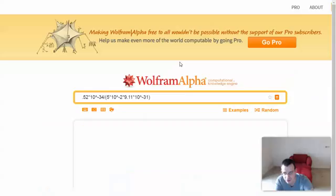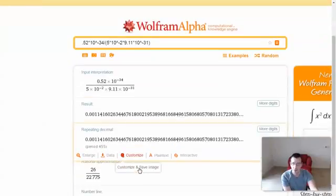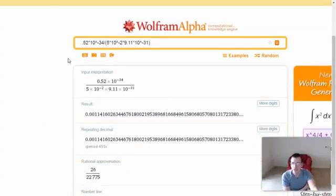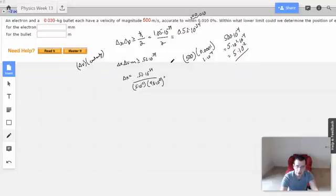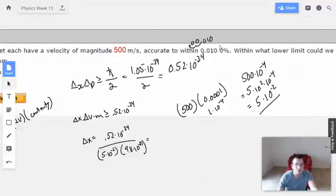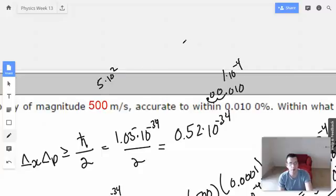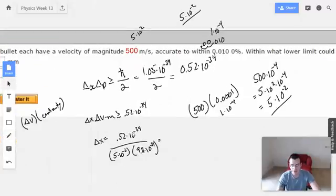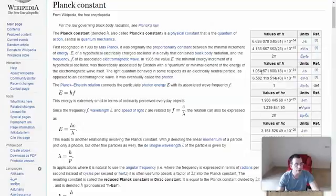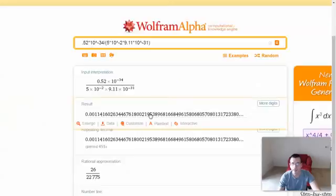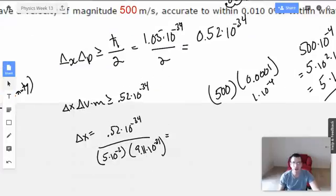This will give us an answer. That's actually really big. Let me make sure I got some of the math right here. Quick check. This is 1 times 10 to the negative 4th. This is 5 times 10 squared. When you multiply them together, we get 5 times 10 to the negative 2nd. Check. 0.52 times 10 to the negative 34th. And then mass of electron is reasonable.